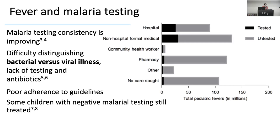Early data from around 2010 showed that testing was still not great — the majority of patients weren't getting tested even in hospitals and formal medical settings. There's still a lot of difficulty distinguishing bacterial versus viral, no tests for that, antibiotics sometimes not available, and guidelines poorly adhered to. Many children with negative malaria tests are still being treated for malaria because providers feel it still looks like malaria and they don't know what else it is.